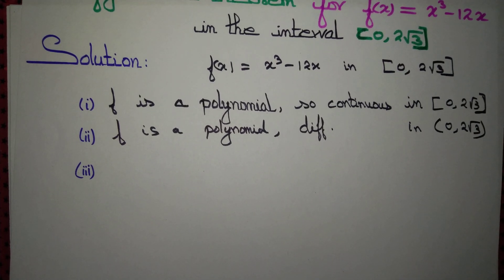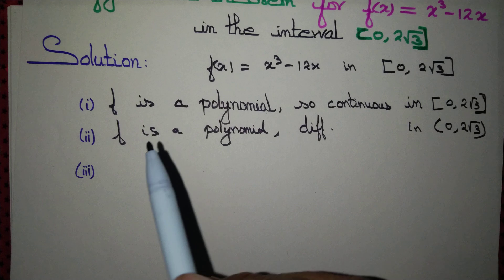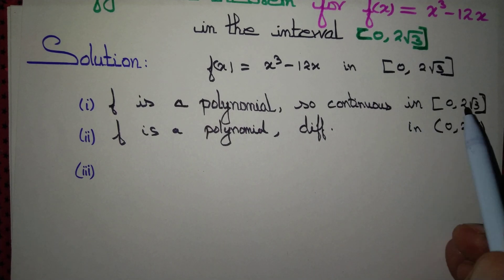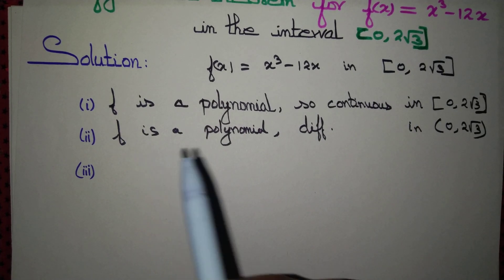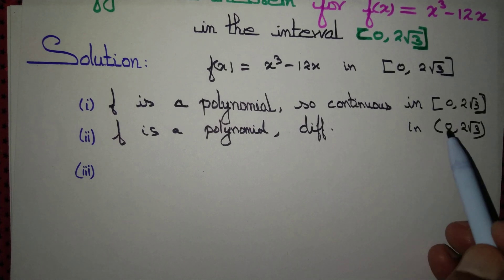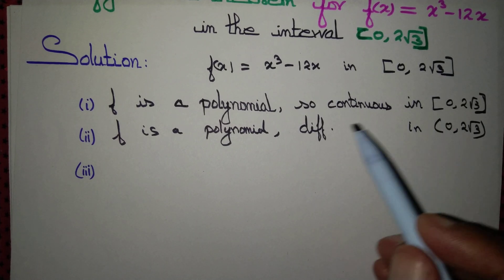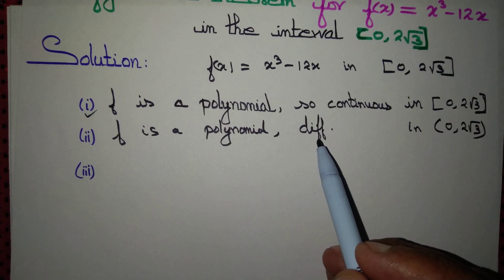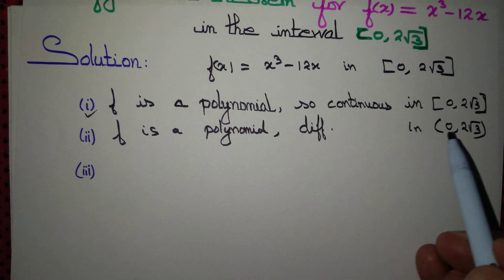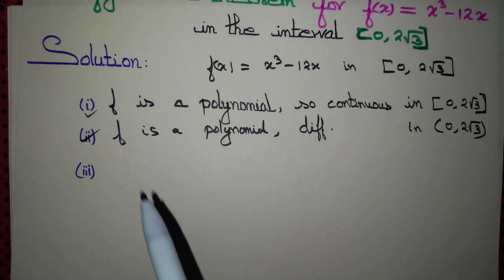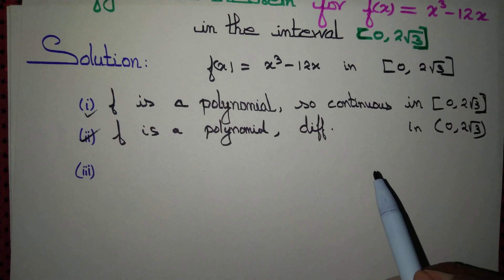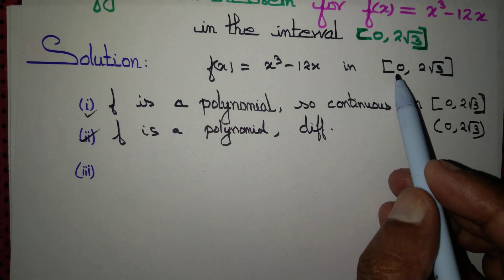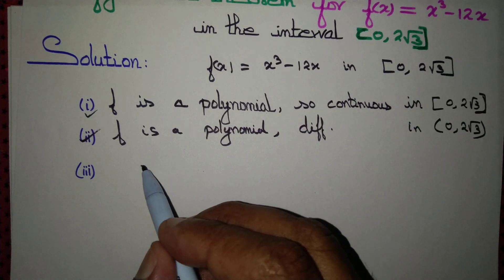What about the value of the function at the endpoints? The first criterion is that f must be continuous in the closed interval — satisfied. The second criterion is that f must be differentiable — satisfied. The third criterion is that f(a) must equal f(b), meaning the values of the function at the endpoints must be equal.